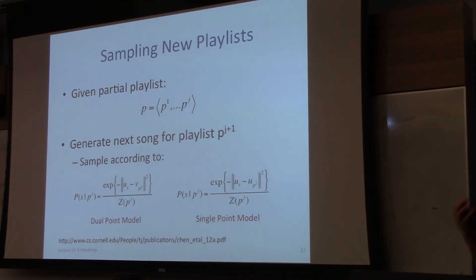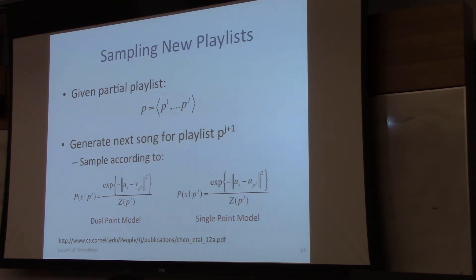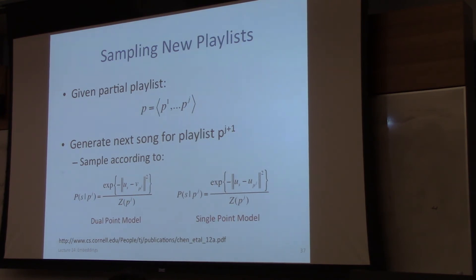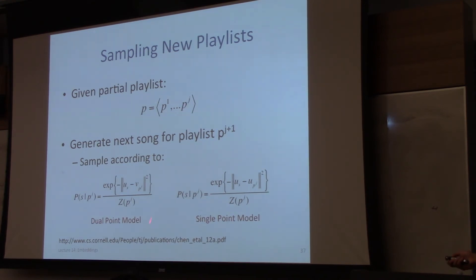We can also sample new playlists — this model is fully generative. Given a partial playlist, you sample the next song using the Markov property: sample from this distribution. You can approximate this by only looking at songs whose entry points are close to the exit point of the current last song, since probabilities decay exponentially.